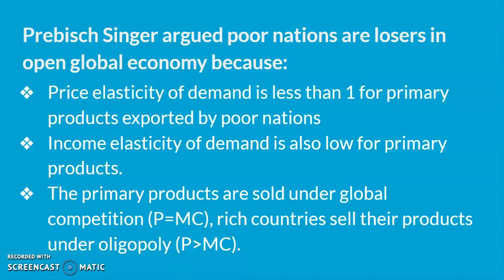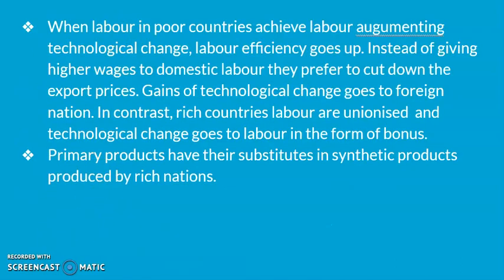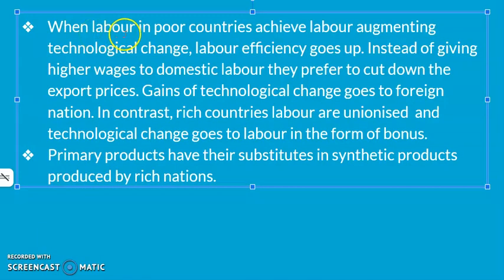Fourth, when labor in poor nations achieves labor-augmenting technological change and labor efficiency goes up, instead of giving higher wages to domestic labor — who are not unionized — they prefer to cut down the export price. So they pass the cost advantage to the foreign consumer, and the gains of technological change go to the foreign consumer.